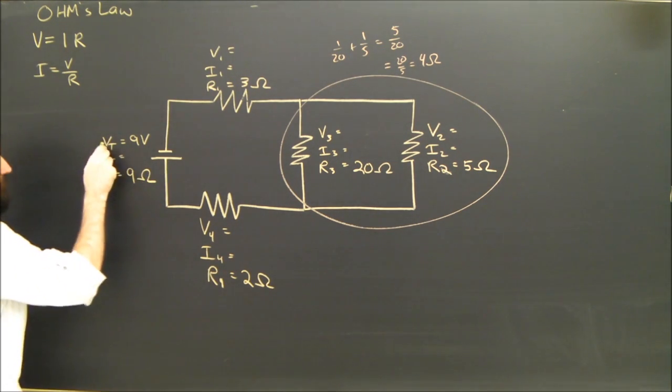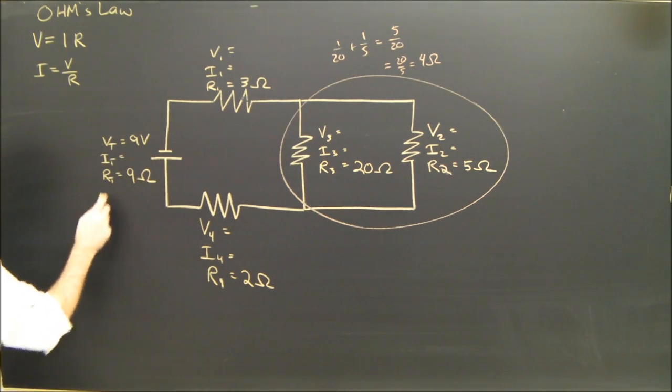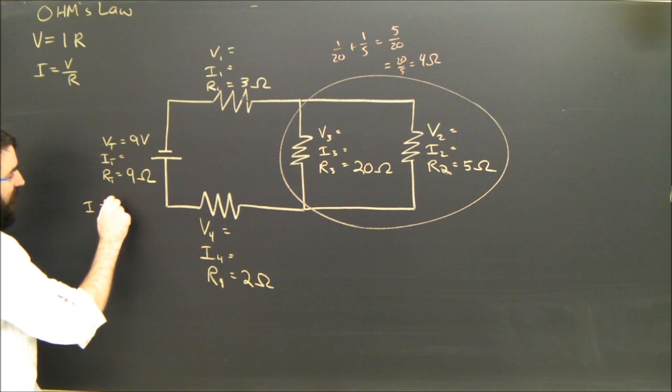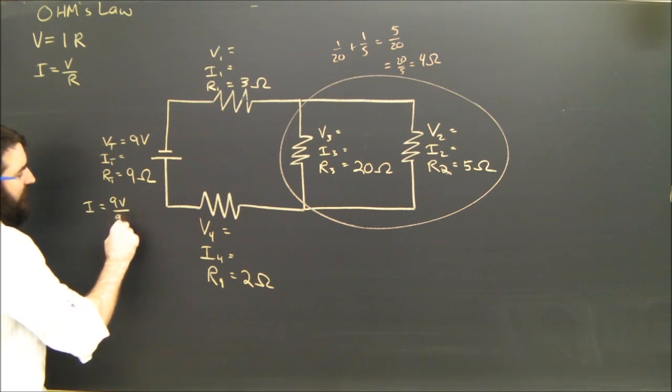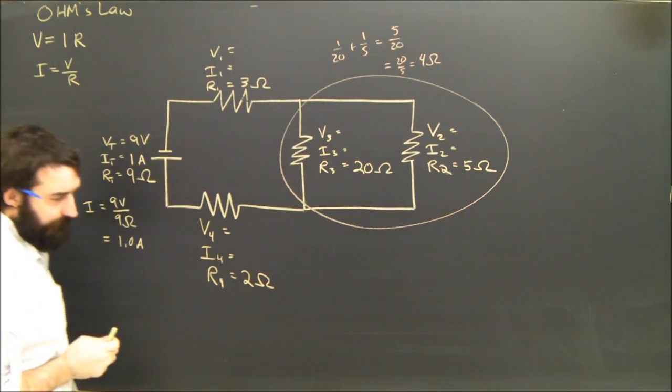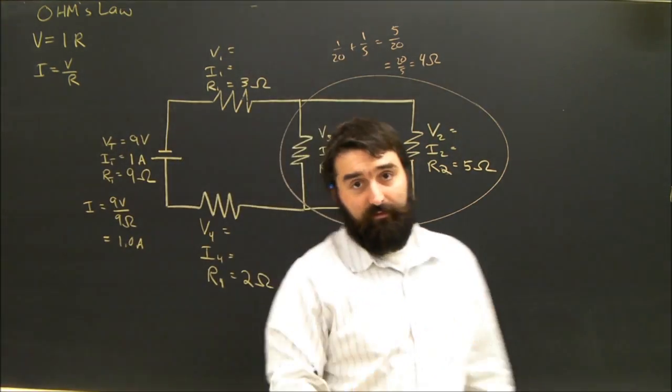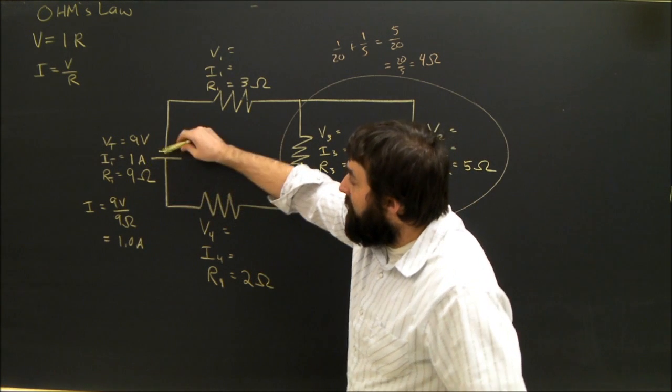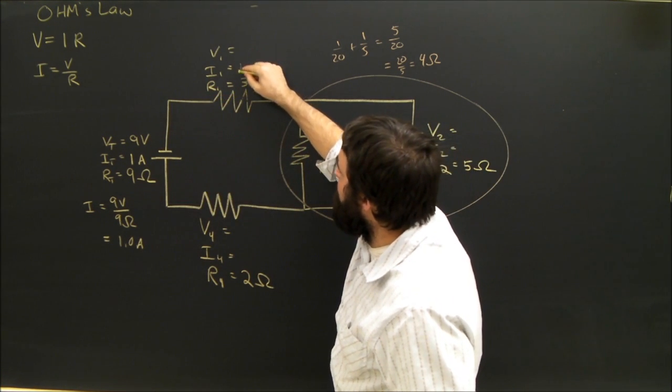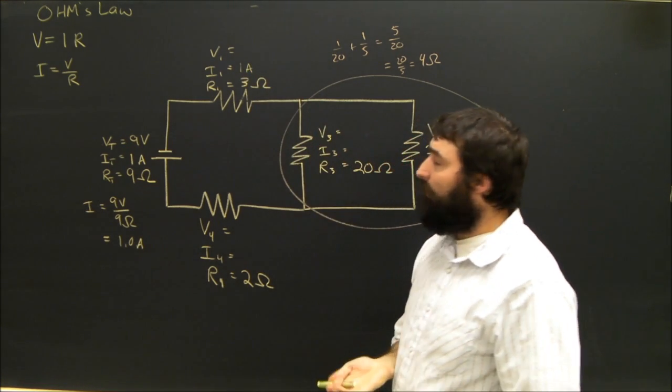Now, I know V and R for the source, so I'm going to use Ohm's Law here. V over R. 9 volts over 9 Ohms is obviously 1 amp. So I'll put 1 amp through there. I knew 2, so I knew 3. If 1 amp is leaving the battery, 1 amp has to go into this resistor. So this also has to have a current of 1.